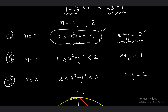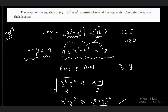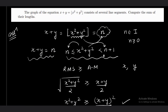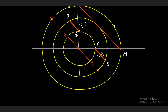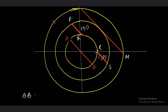Reading the question again: compute the sum of the lengths of all segments. The lengths to calculate are AB, PQ, RS, and LM. AB is very simple — it is the diameter of the smallest circle of radius 1, so the length of AB equals 2.